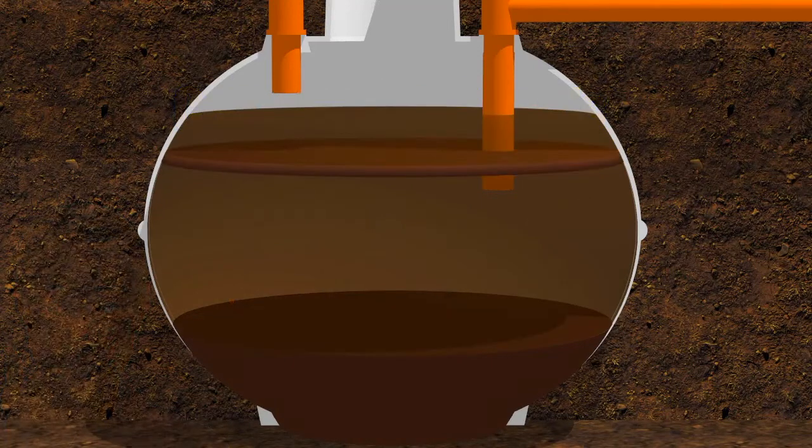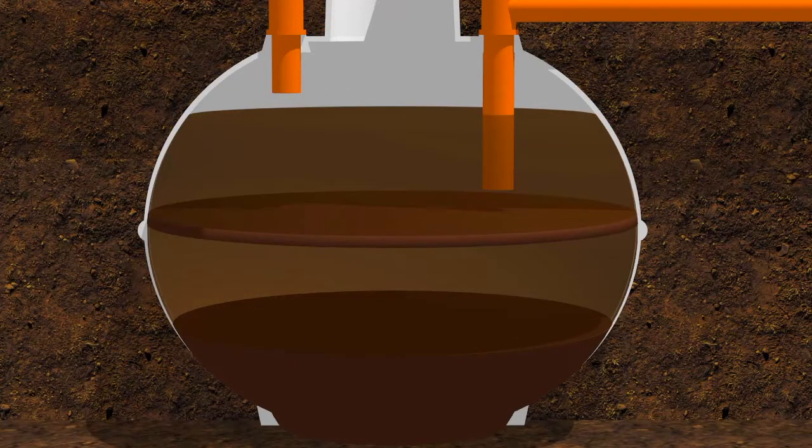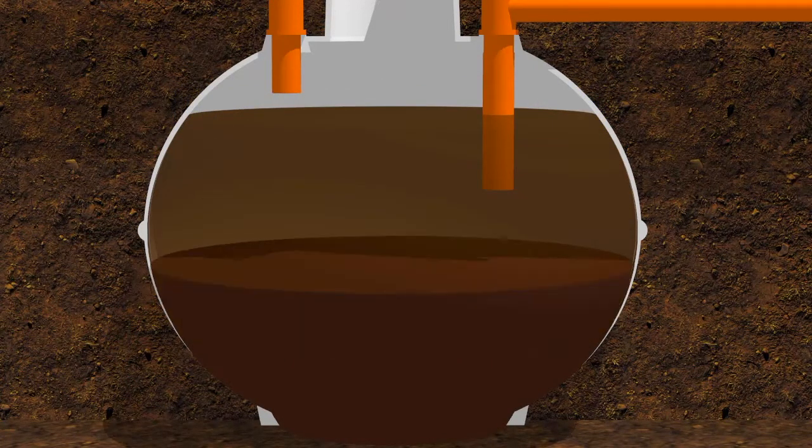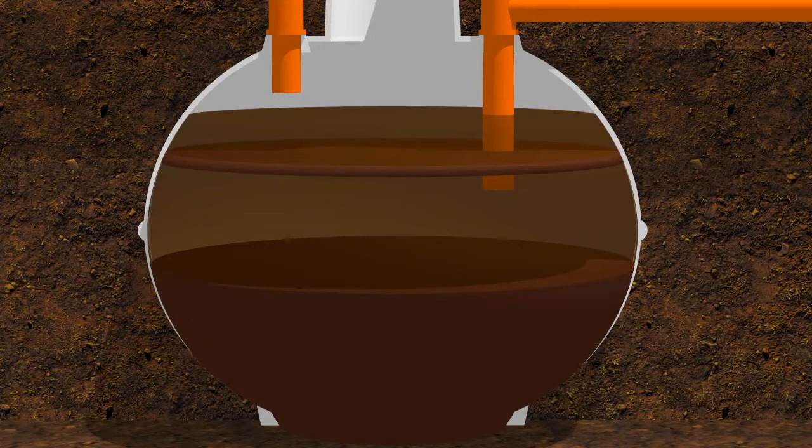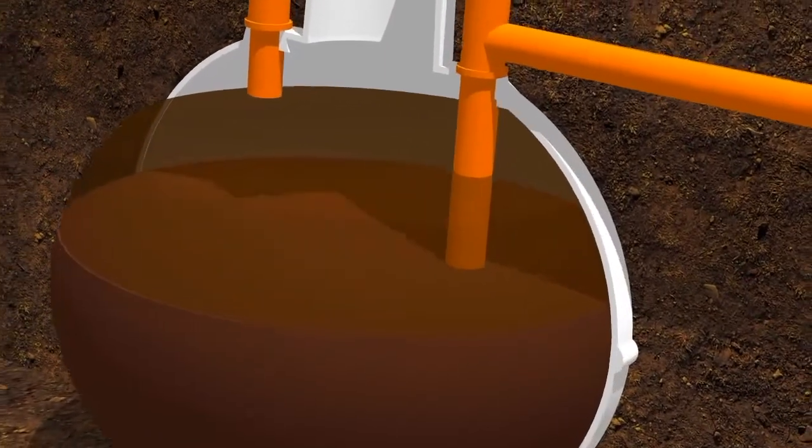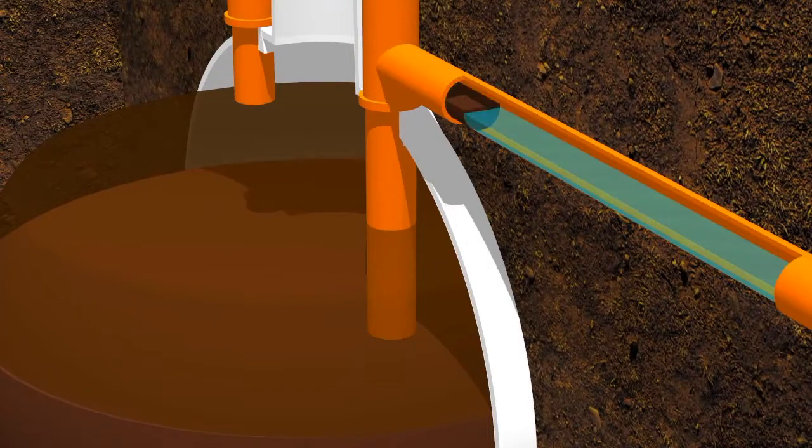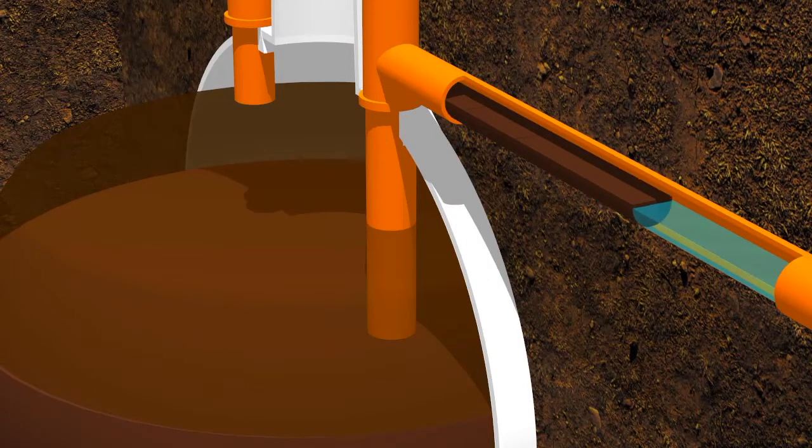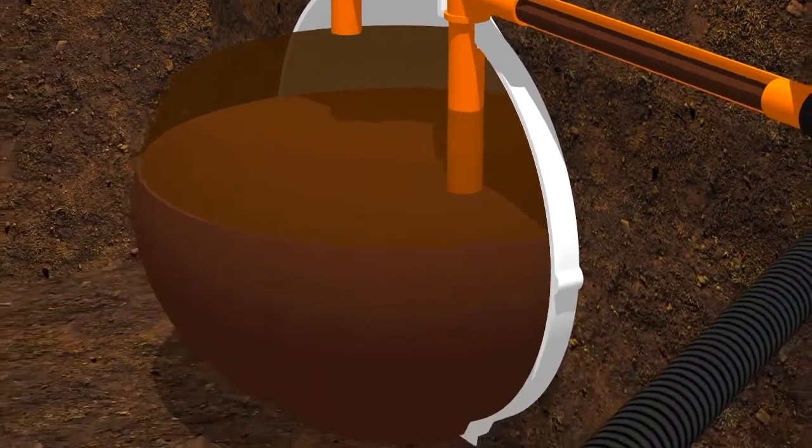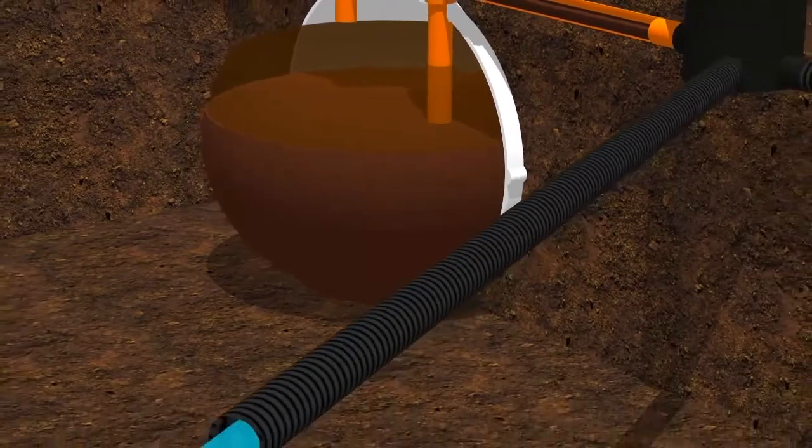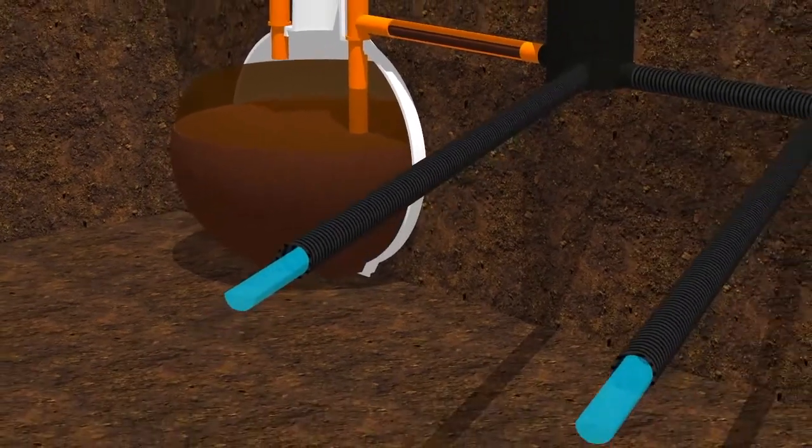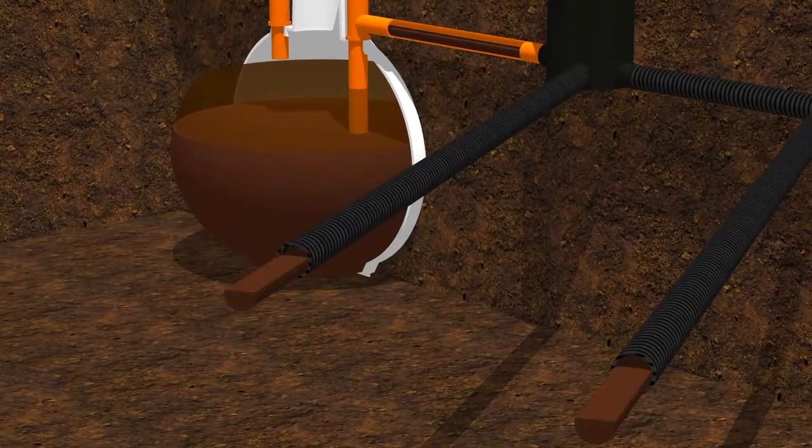The fat and the grease and sludge continue to build up inside the septic tank until eventually it reaches the outlet pipe. From there, the fat and the grease and the sludge then starts to make its way through this outlet pipe and enters the pipe arteries that lead to the soak away. And in time, the fat and the grease and the sludge start to choke and clog and block up the entire septic tank and soak away system.